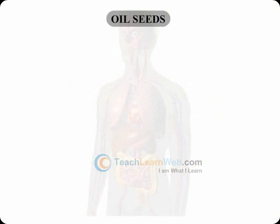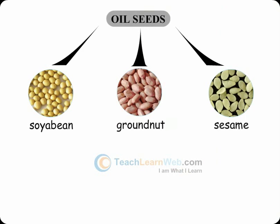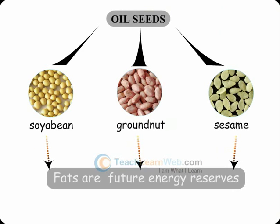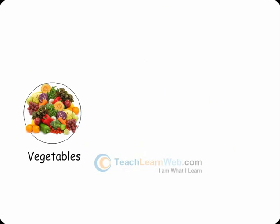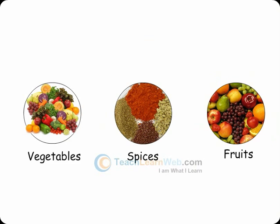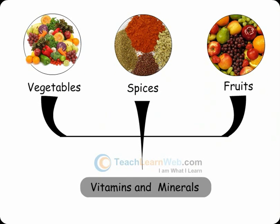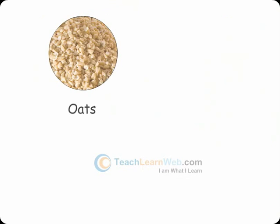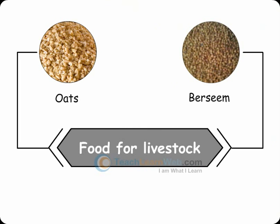Oil seeds like soybean, groundnut and sesame provide us with fats, which serve as future energy reserves. Vegetables, spices and fruits provide us with vitamins and minerals. Oats and barsem are raised as food for livestock.